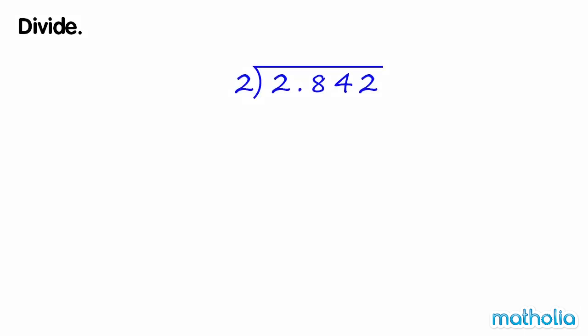Divide. Find 2.842 divide 2. 2 ones divide 2 equals 1. 2 subtract 2 equals 0. Bring down the tenths.